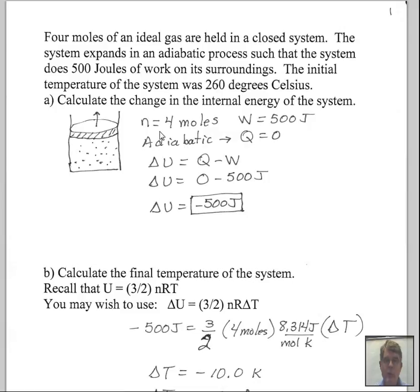We're told we have four moles of material and we are going to let this system expand adiabatically. That means that the Q number is zero. No energy goes in, no energy goes out during this process. The Q is zero. The work done is 500 joules as the system expands.